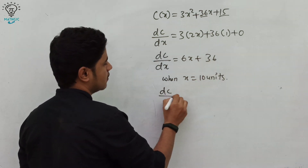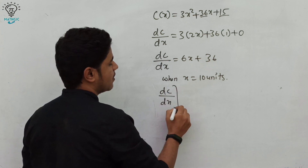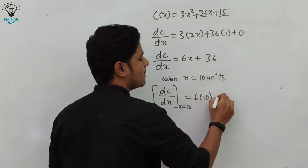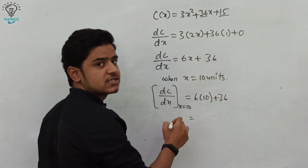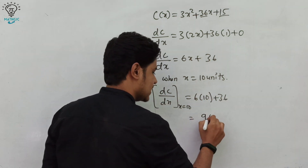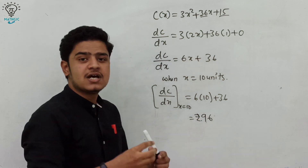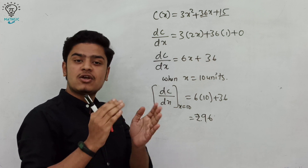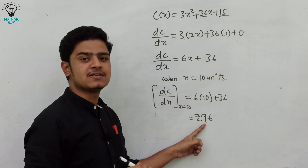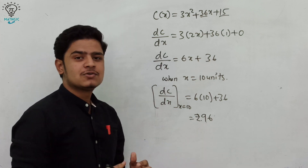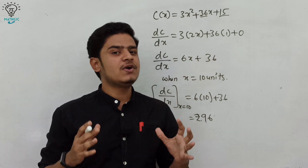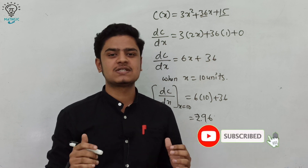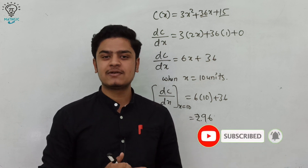Substituting x = 10: marginal cost = 6 × 10 + 36 = 60 + 36 = 96 rupees. This means if the company increases production by 10 units, the marginal cost increases by 96 rupees per unit. These are three main examples of differentiation in real life. I hope you liked this video — subscribe and press the bell icon for more notifications.